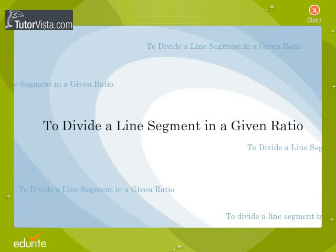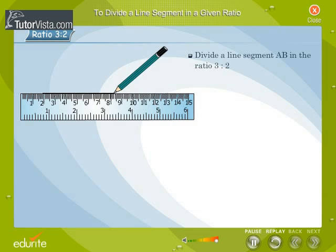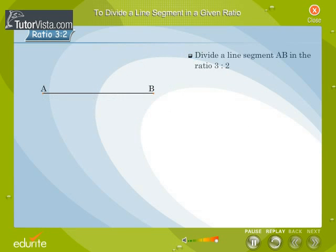To divide a line segment in a given ratio. We are given a line segment AB. We want to divide it in the ratio 3 is to 2.